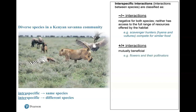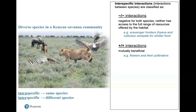A positive-positive interaction is mutually beneficial to both species — they both benefit from this relationship. An example here: these flowers have pollen and want to pollinate another flower in order to sexually reproduce. Those flowers have pollinators. A bee comes in and pollinates — that bee benefits because it gets food, and that flower benefits because it achieves pollination. So that's a positive-positive interaction.